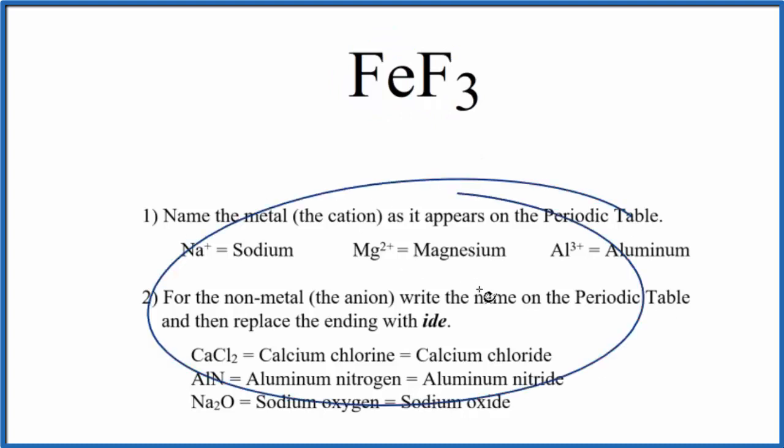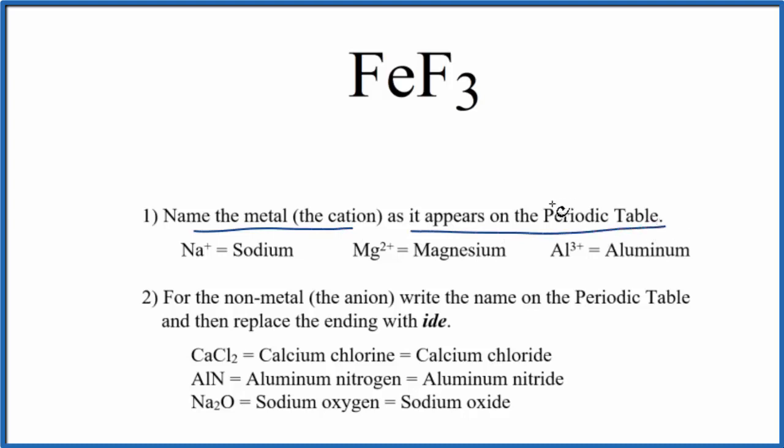So we use these rules here to write the name. First, we write the name of the metal. That's as it appears on the periodic table. Fe, that's iron.